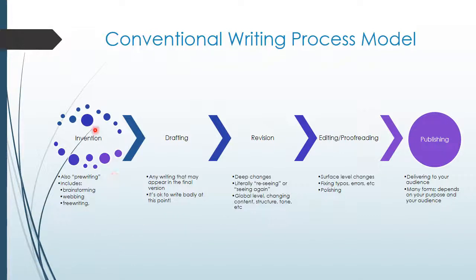We conventionally talk about it starting with invention — this is the phase where you come up with what you want to say. I'm using the word invention because brainstorming and pre-writing are often used synonymously, but they have specific meanings I'm avoiding here. Brainstorming refers to a specific process of just throwing ideas out and jotting whatever comes to mind, whereas invention can take place through many different methods. I'm also avoiding pre-writing because, as we'll talk about later, it doesn't always happen before the writing.